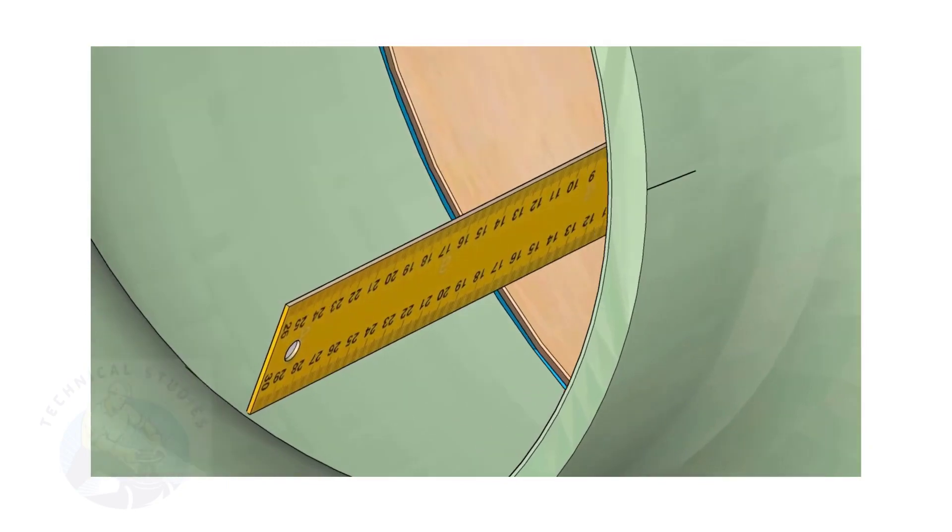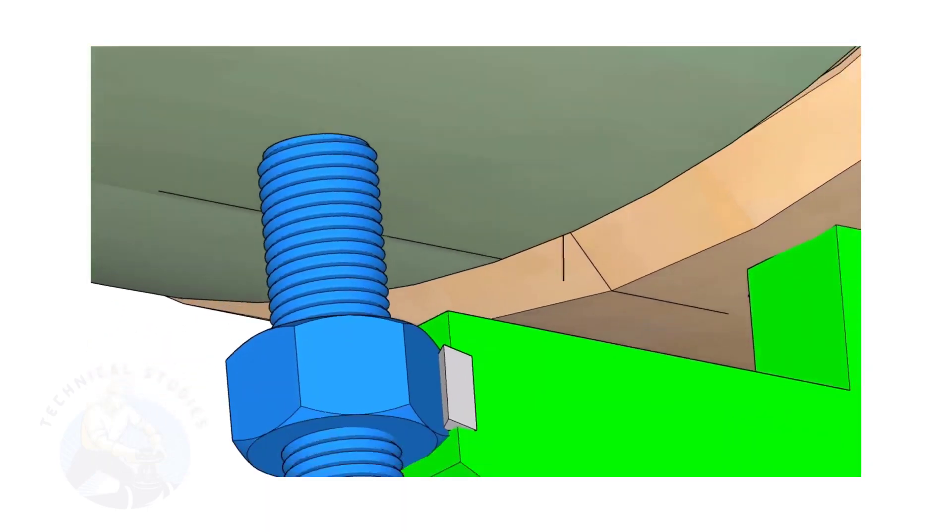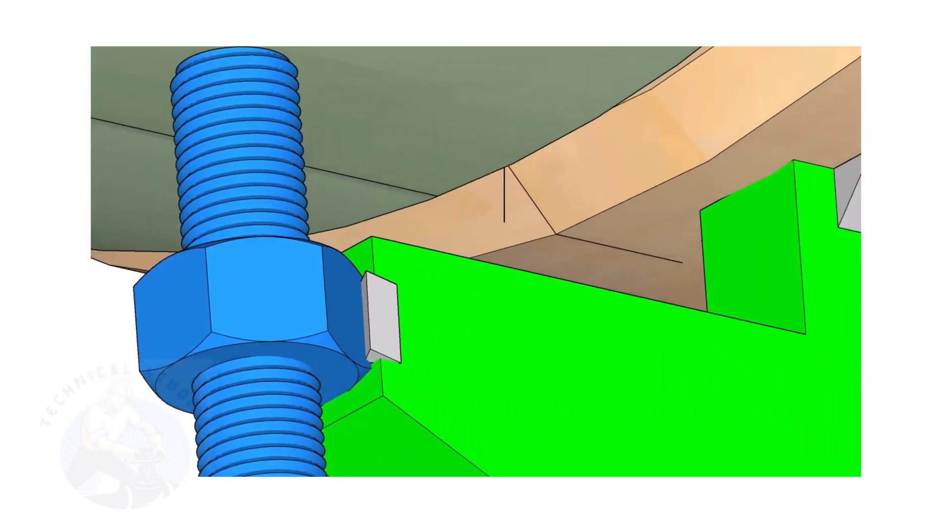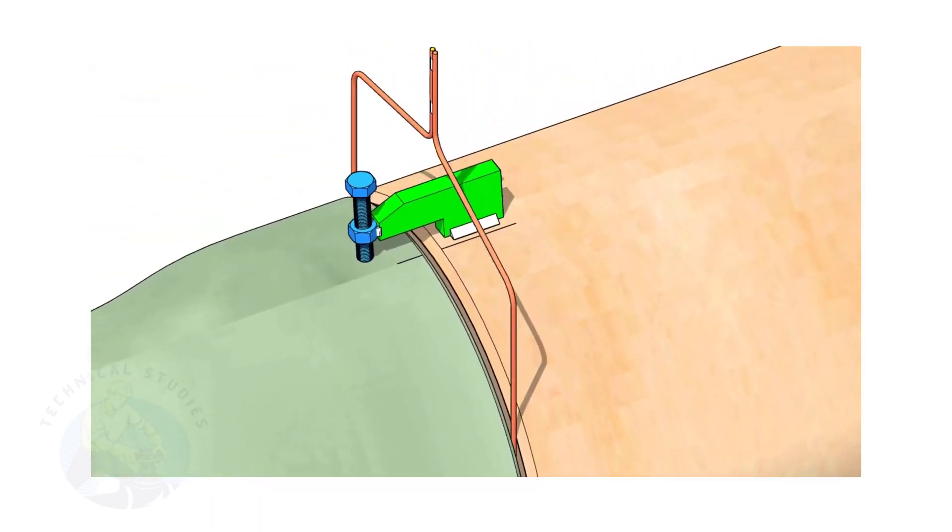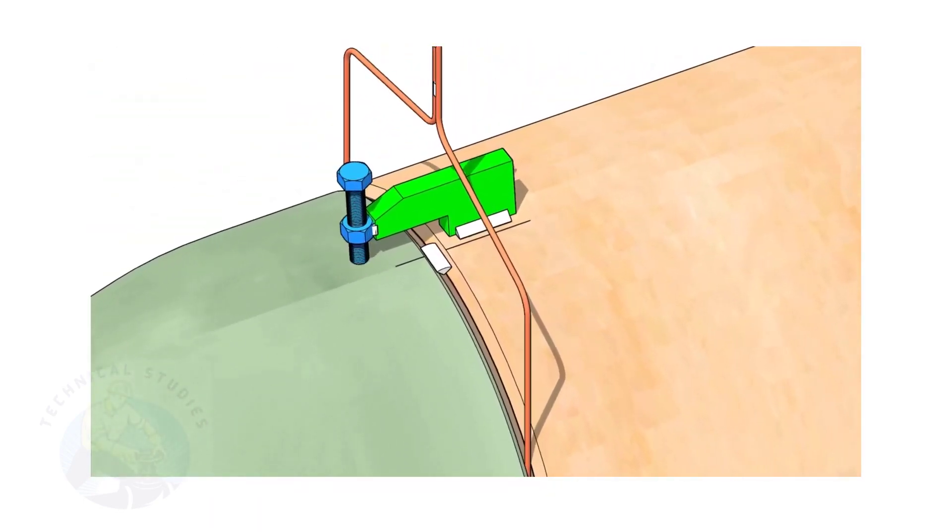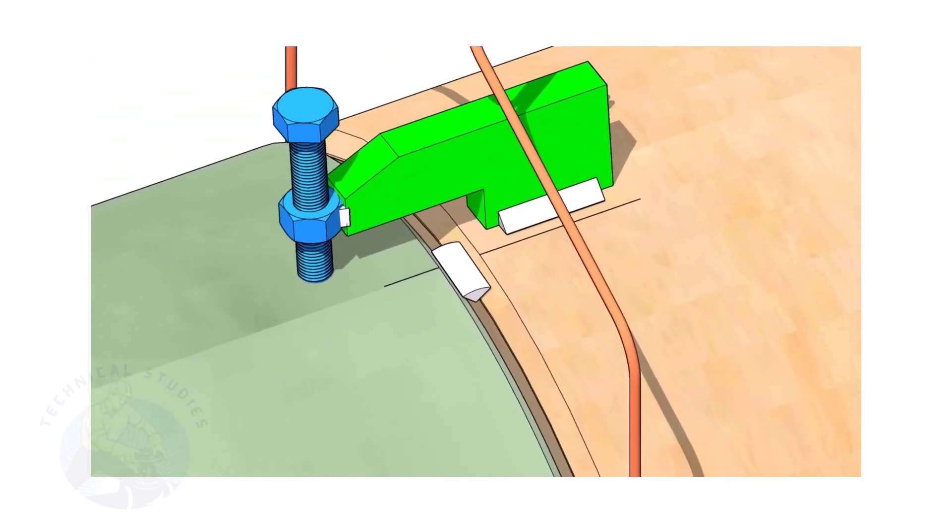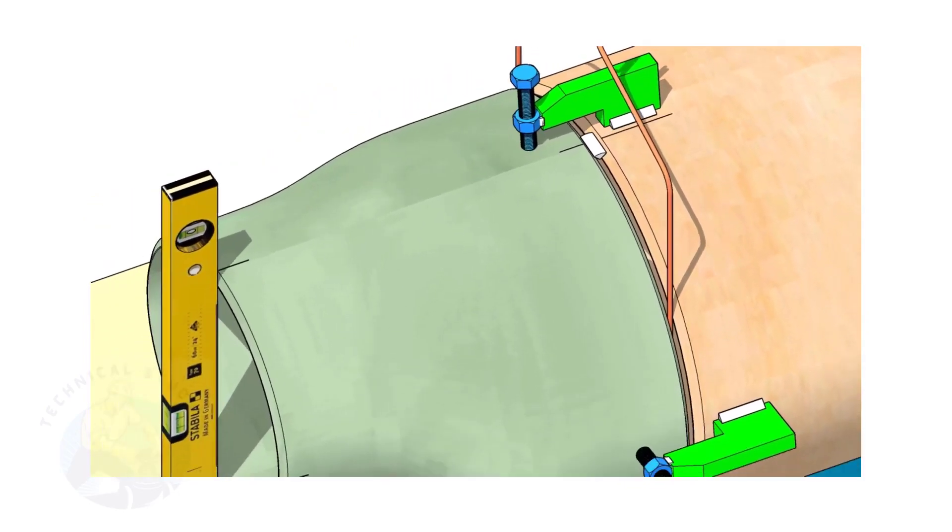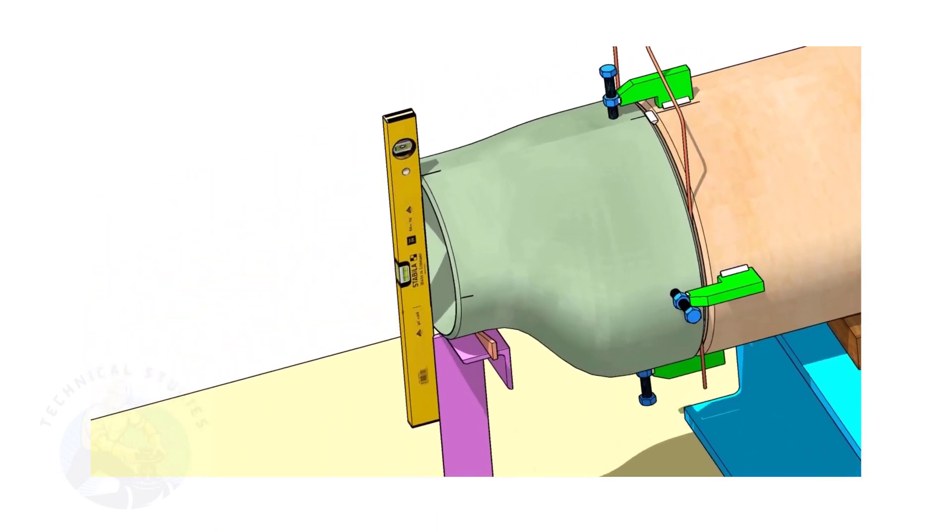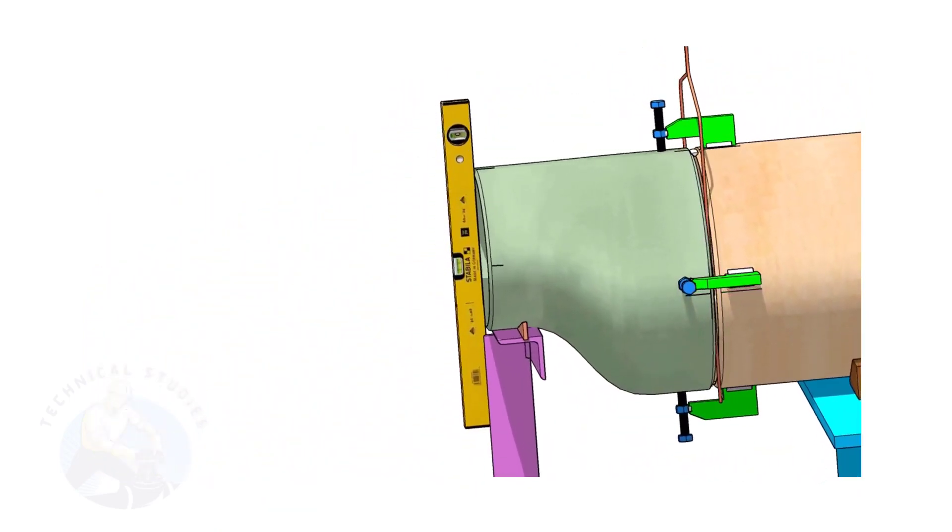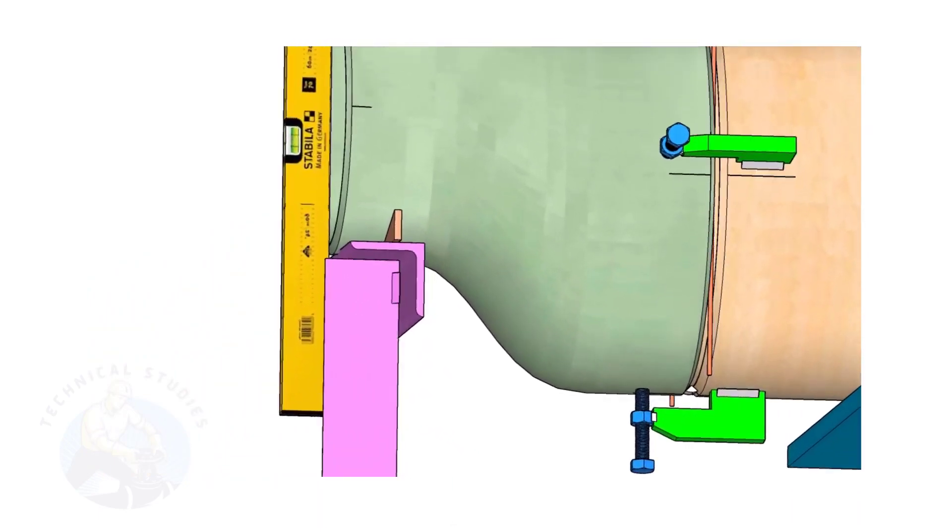By adjusting the jack bolts, correct the overlap of the joint inside the pipe. Now, tack weld on the top side of the joint. Correct the levelness of the outer face of the reducer. Tack weld in the bottom side of the joint.